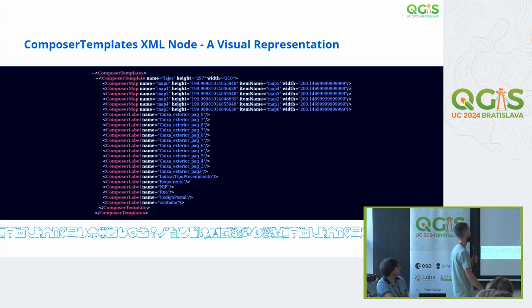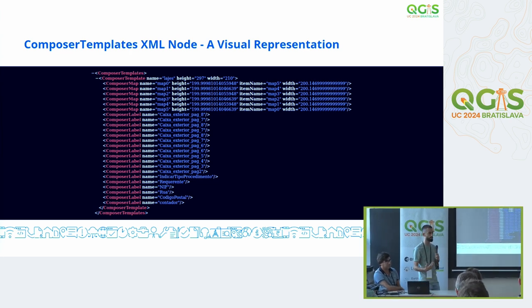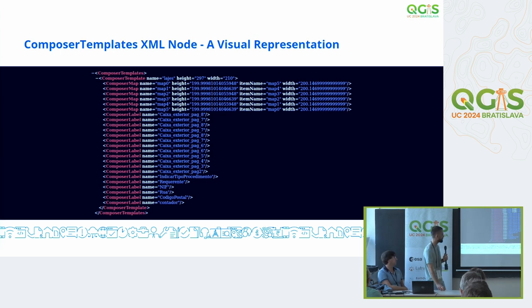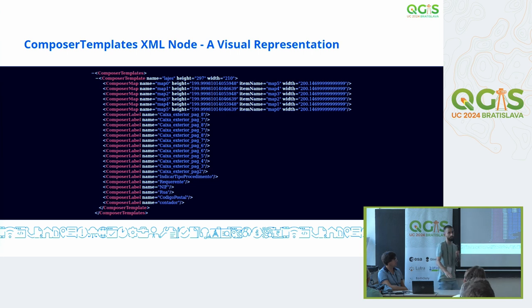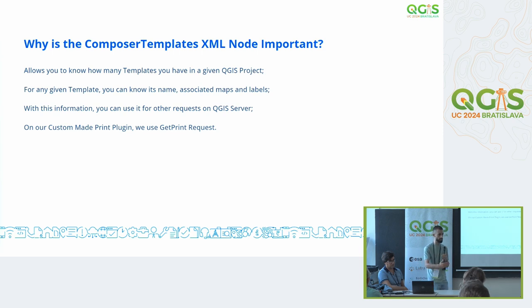Here is a representation of the object. This is important because what we really want to do is pass label values from our WebGIS framework — in this case MapStore, which we extend. We want to get these values from the user: the user inputs it, and we want to have a way to pass it to QGIS server. Then QGIS server will take these names, attach the value, and be able to print. You can know how many templates there are, what labels you want to pass the value to, and you can also pass map information. You pass this information with the get print request on QGIS server.